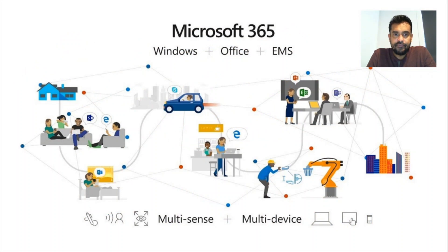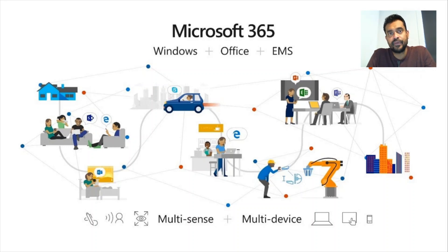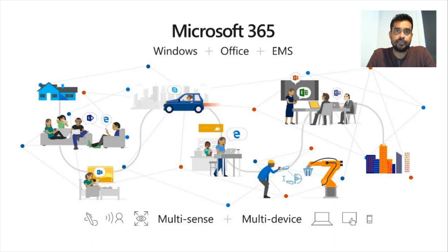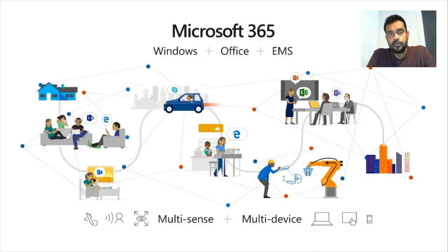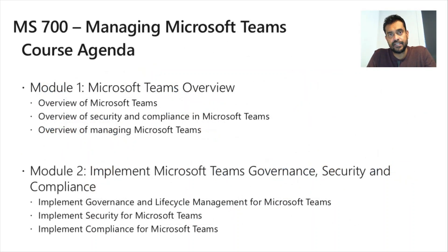Microsoft 365 is a combination of Windows 10 Enterprise, Enterprise Mobility and Security, and Office 365. So it's a combination of three products offered in a single subscription. Microsoft 365 is offered in different ways with different subscriptions — it has business subscriptions and also enterprise subscriptions. Microsoft Teams can be part of your subscription, whether it's Office 365 or Microsoft 365.